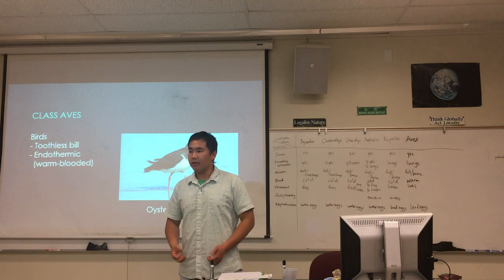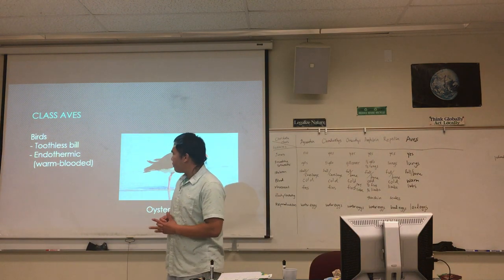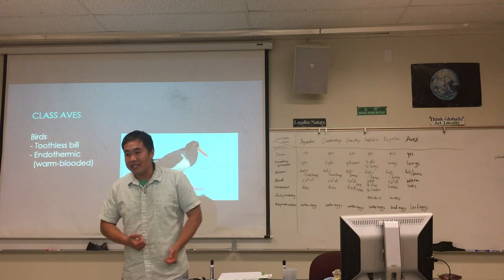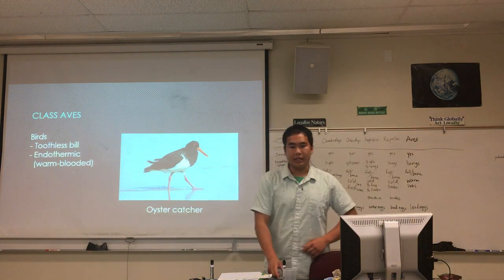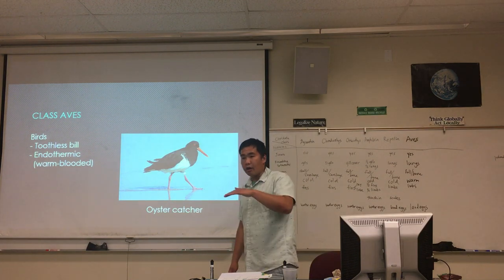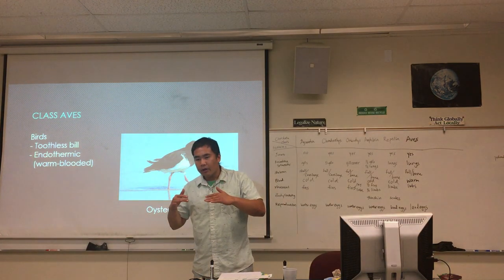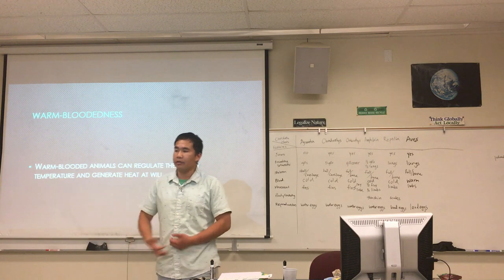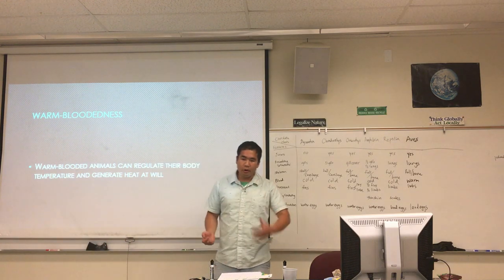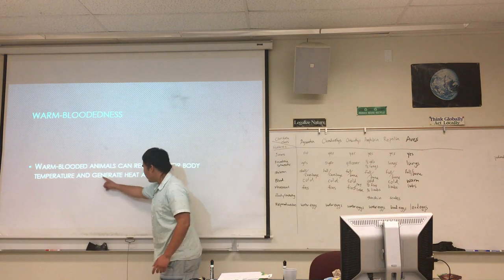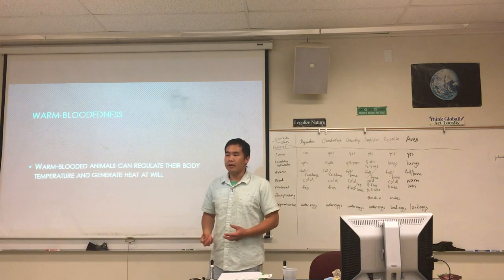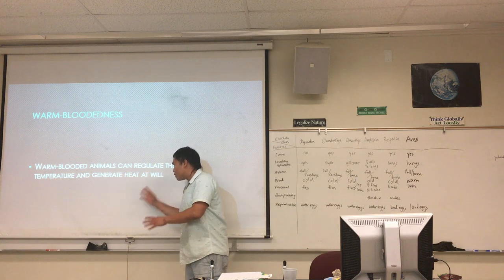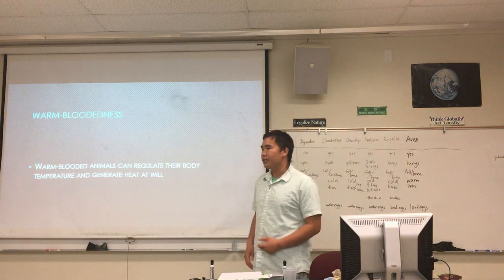What does warm-bloodedness mean compared to cold-blooded? A cold-blooded animal does not regulate its body temperature — it goes with the flow of the environment. A warm-blooded animal regulates its temperature, trying to keep it stable at around 98°F or 37°C. If it goes above, it cools down; if below, it warms up. A warm-blooded animal will put in extra energy to generate heat to warm itself back up.